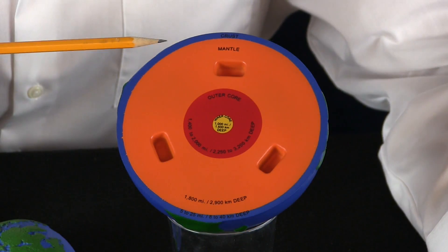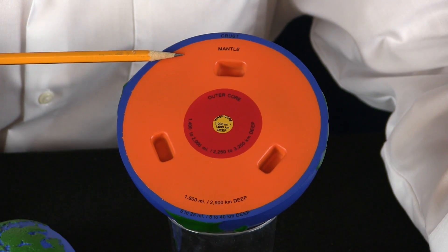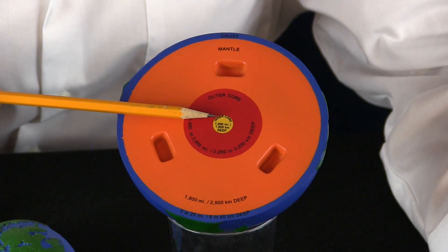In this model, the crust is blue, the mantle is orange, the outer core is red, and the inner core is yellow.